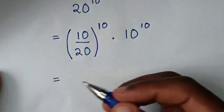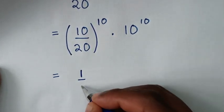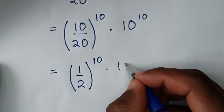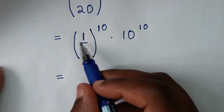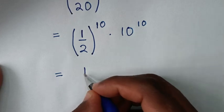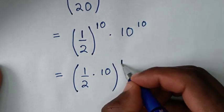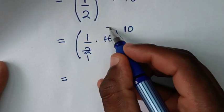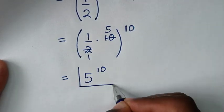Then in the next step it will be equal to: from here to simplify, this 0 will cancel this 0, so it will be 1 over 2 — so here 1 over 2 — then bracket this same power of 10 times this exponent of 10 power of 10. Simplifying this base of 1 over 2 times this base of 10, bracket the same power of 10, gives us 5 power of 10. So 5 power of 10 is our final answer.